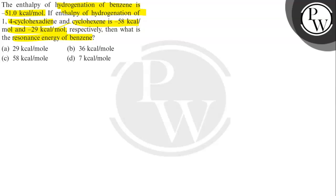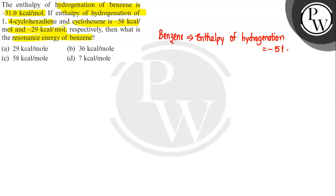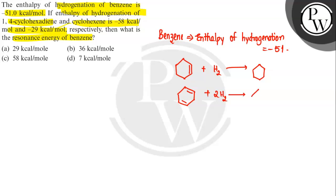The enthalpy of hydrogenation of benzene is minus 51 kilocalorie per mole. Cyclohexene treated with 1 mole of hydrogen is converted to cyclohexane. 1,4-cyclohexadiene treated with 2 moles of hydrogen is also converted to cyclohexane, with delta H values of minus 29 and minus 58 respectively.